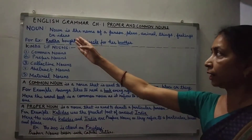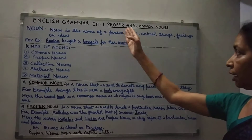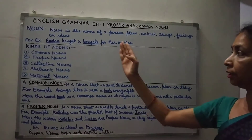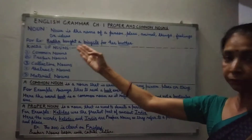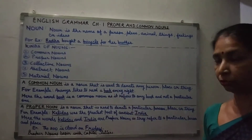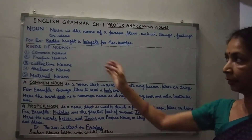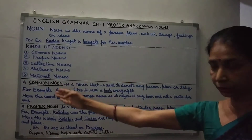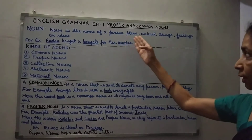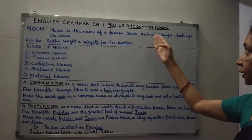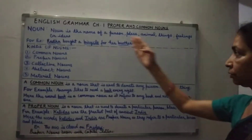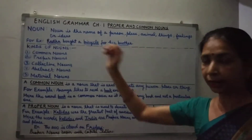But before telling about proper and common nouns, let me revise once again what is a noun and the kinds of noun. A noun is the name of a person, place, animal, things, feelings or ideas.